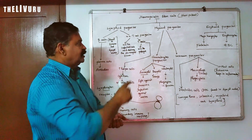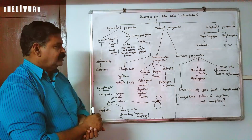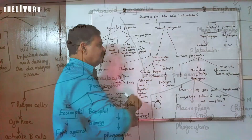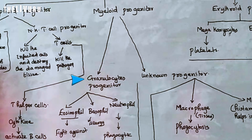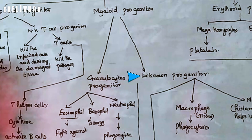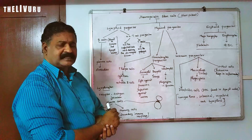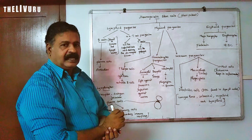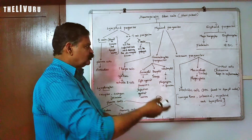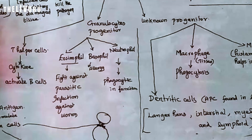The other cells come from myeloid progenitors. There are two types of progenitors from myeloid. Granulocytes are cells with bi-lobed or tri-lobed nucleus along with granules in their cytoplasm — examples are Eosinophil, Basophil, and Neutrophil.